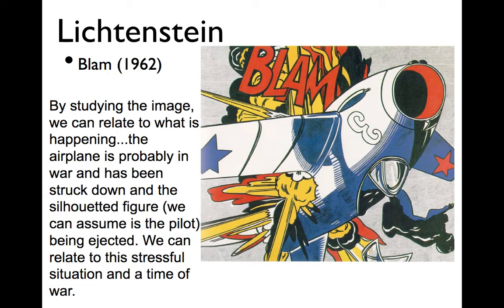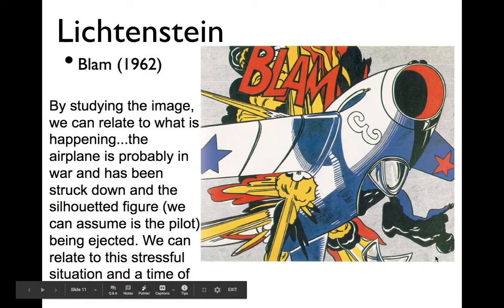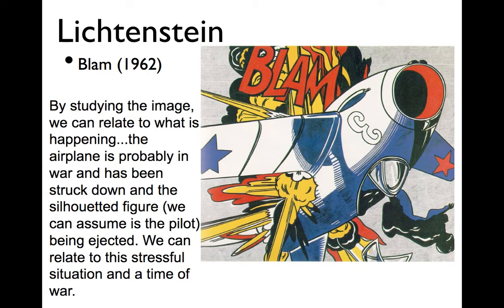This next one is called 'Blam.' By studying the image, we can relate to what is happening: an airplane, probably in war, is being struck down. The silhouetted figure over on the right we can assume is the pilot being ejected. We can relate to this stressful wartime situation. Teaching near Killeen and Fort Hood, we are all very close to the military, and this one is always popular with students because they can relate to it — or maybe it reminds you of an old video game.